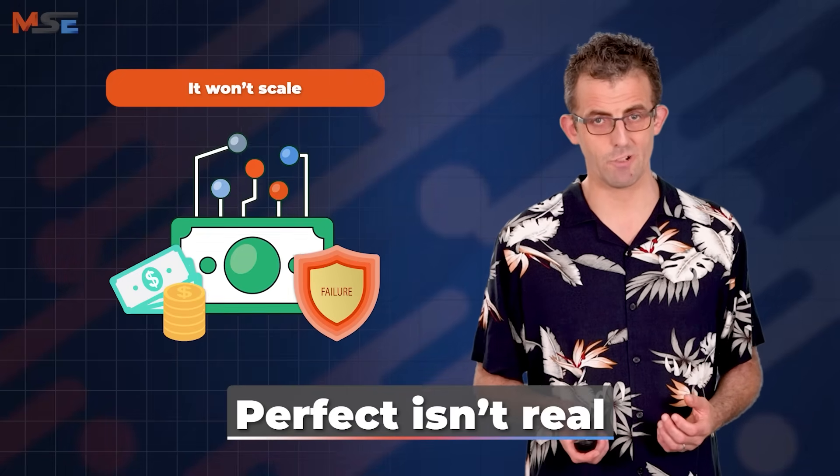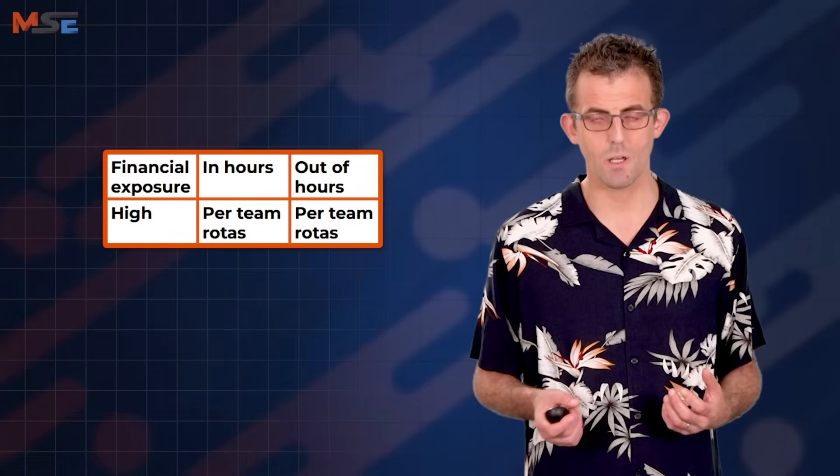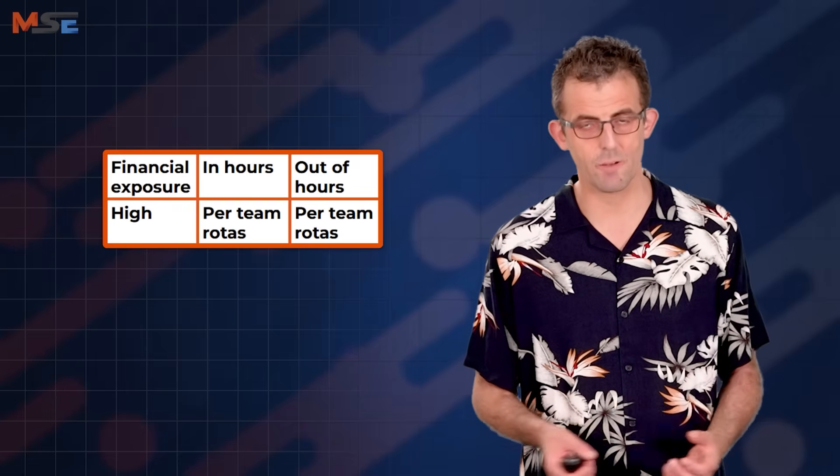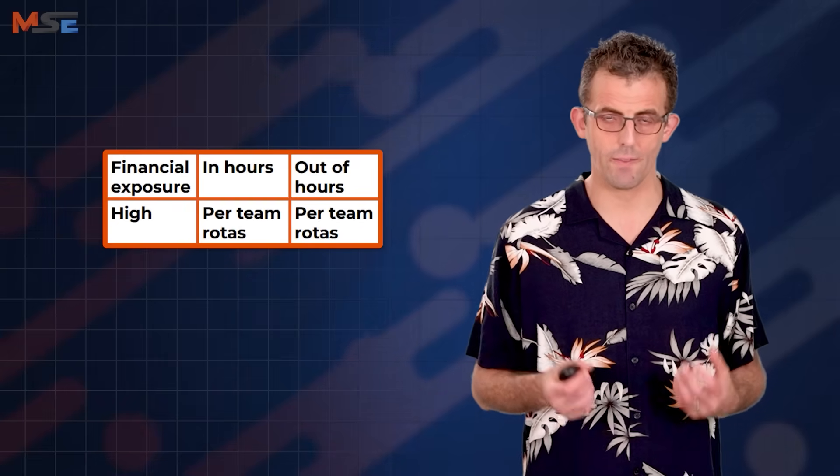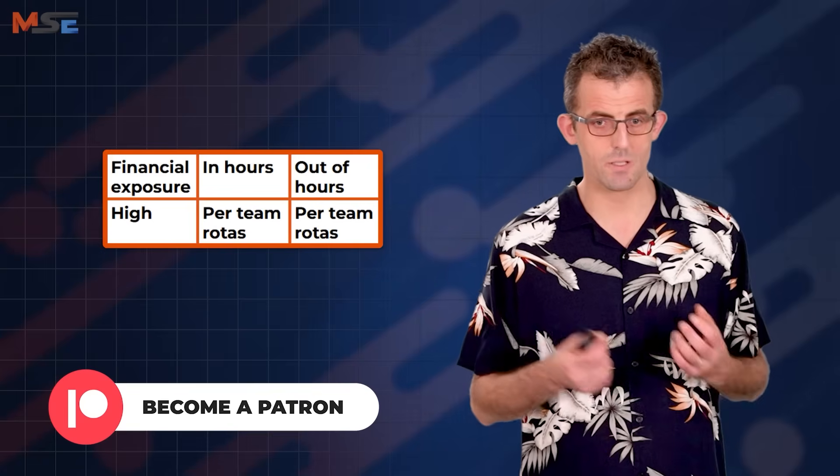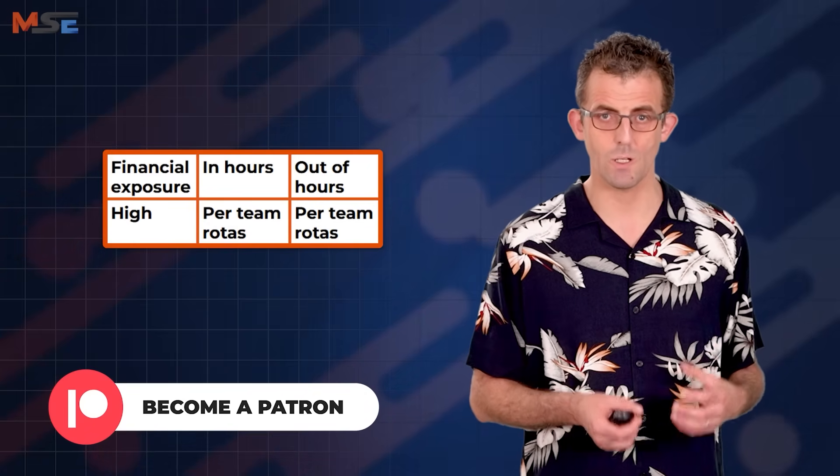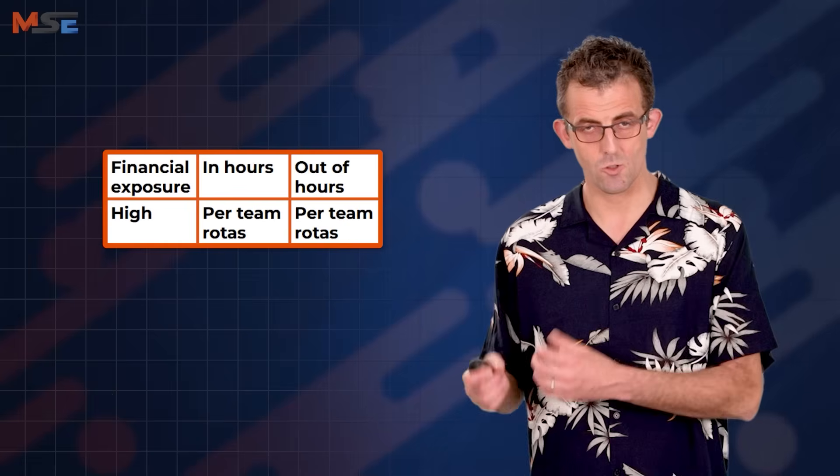This model isn't perfect, but I've used it in large enterprise organizations, and it's worked out pretty well. Besides, perfect isn't real. Your mapping will show you, probably, that you have a few teams with critical services, where there's a lot of revenue flowing through those services out of hours, and those teams should have a dedicated on-call engineer in hours and out of hours. And as I've said before, you need to compensate people to be on-call as well as to be called out.